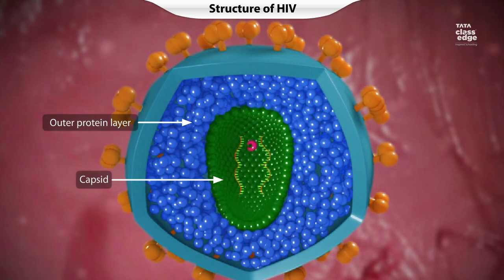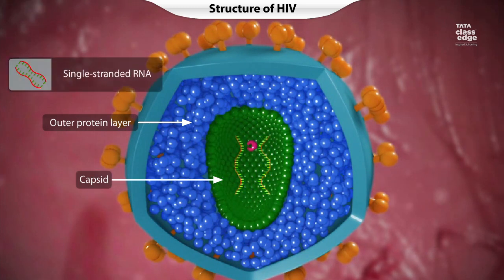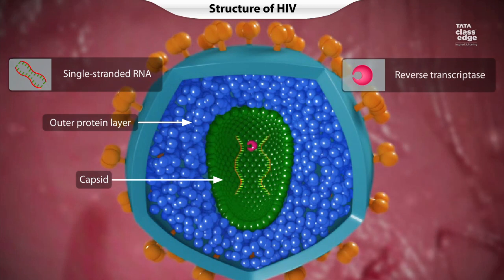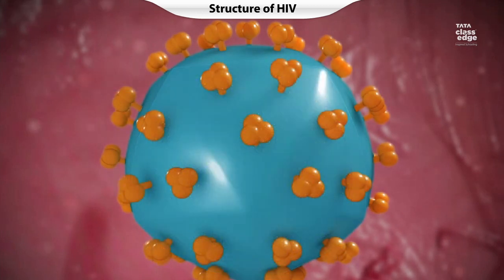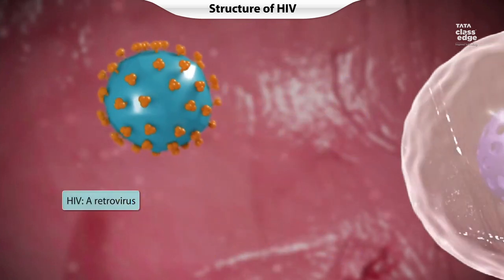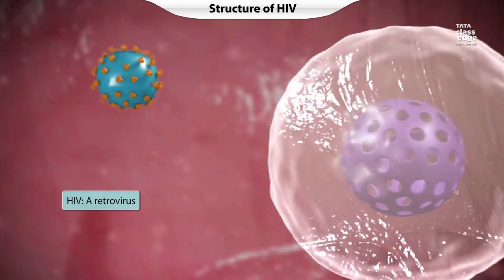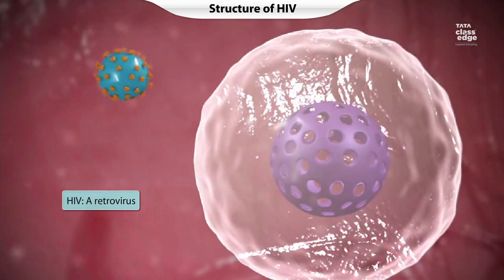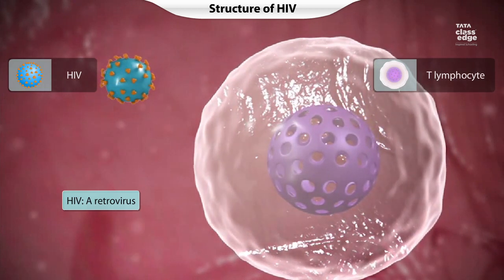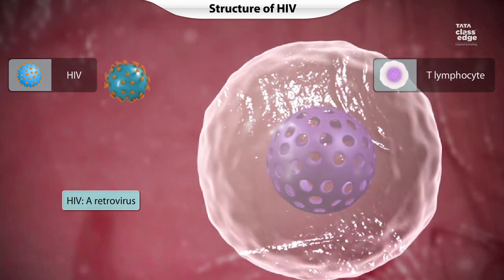Within the capsid, there are two single-stranded RNA molecules and the enzyme reverse transcriptase. These molecules help the virus take over host cells. Viruses carrying the enzyme reverse transcriptase are classified under the retroviral family. The enzyme reverse transcriptase plays a key role in viral replication.